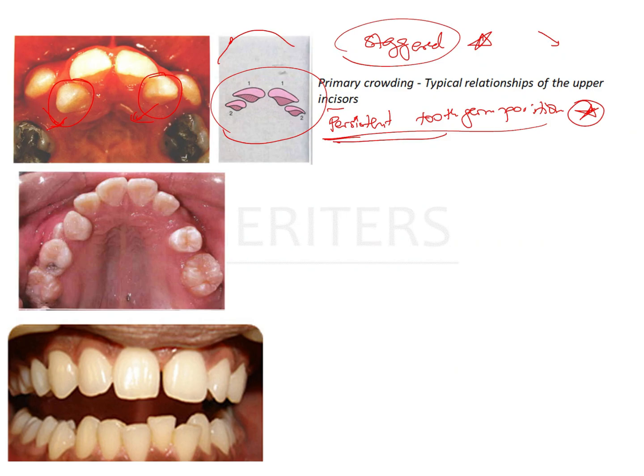This is very commonly seen in the upper anteriors, and these staggered and persistent tooth germ positions are characteristic findings of primary crowding.